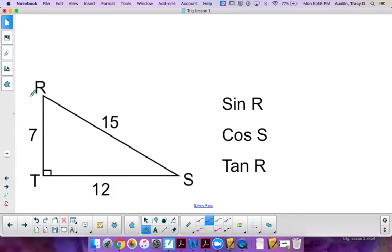All right, so there's angle R. So for angle R, that would be opposite, that would be adjacent, and that would be hypotenuse. Okay, so sine of R, opposite, the one that doesn't touch the angle over the hypotenuse, so that's 12 over 15.